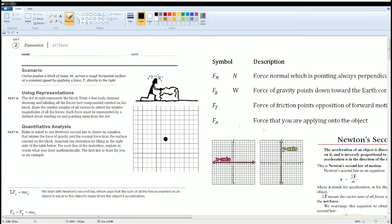Welcome, this is the AP Physics workbook solution. Here we have Unit 2 Dynamics, section 2.C which is on forces. Here's the scenario: Carlos pushes a block of mass M across a horizontal surface at a constant speed by applying a force F directly to the right.